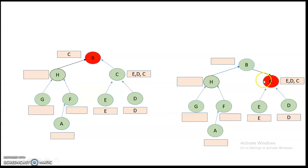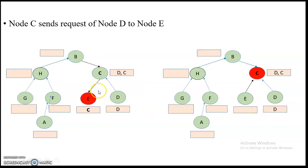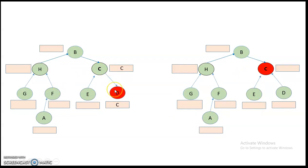C's queue contains E, D, and C. The top of the queue is E, so the token is passed to E. E then returns the token to C — its parent — and at the top of C's queue is now D. C passes the token to D. D returns the token to C since C is D's parent, and now both queues are empty. This is how Raymond's Tree Algorithm works using a token-passing mechanism.